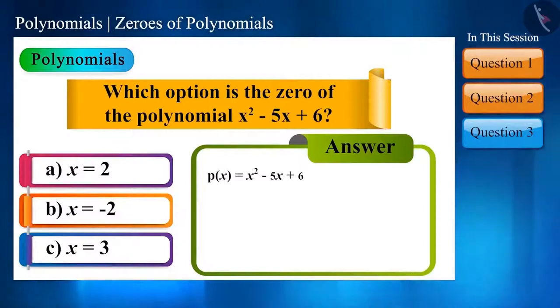But before solving, keep this in mind: since the highest power of the polynomial is 2, this polynomial can have more than one zero.